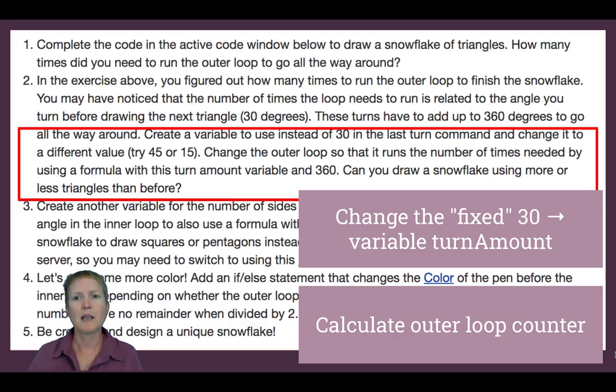I feel like that could have been put together. Anyway, next, create a variable to use instead of 30 in the last turn command and change it to be something else, try 45 or whatever. So it's saying, you know, last time we knew we would go 12 times in the outer loop because we're always turning 30 degrees on the inside. And so that like 360 divided by 30 was 12. So we calculated that and we put the 12 number in.